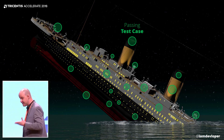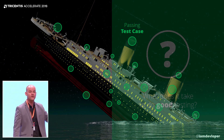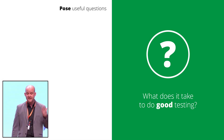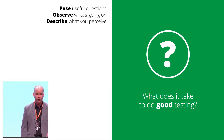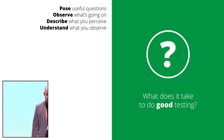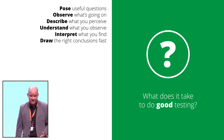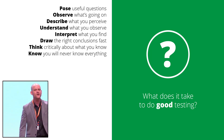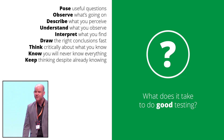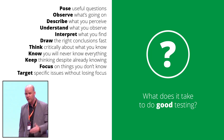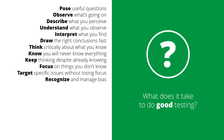So the question that arises now is: how do we avoid scenarios like this? What does it take to do good testing? Well, good testing takes the ability to pose useful questions, to observe what's going on, to describe what you perceive, to understand what you observe. Good testing takes the ability to interpret what you find, to draw the right conclusions fast, to think critically about what you know, to know that you will never know everything, to keep thinking despite already knowing, to focus on things you don't know, to target specific issues without losing focus. Good testing takes the ability to recognize and manage bias, to form test conjectures, to jump on those conjectures — not just on conclusions.